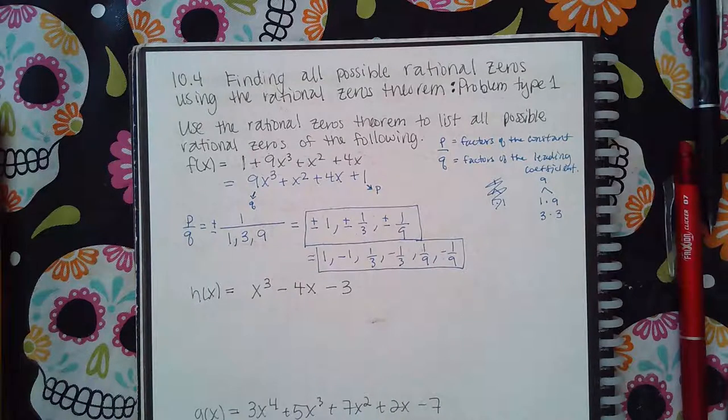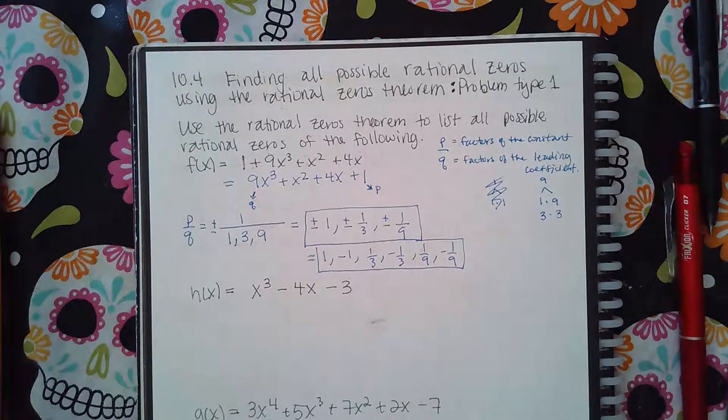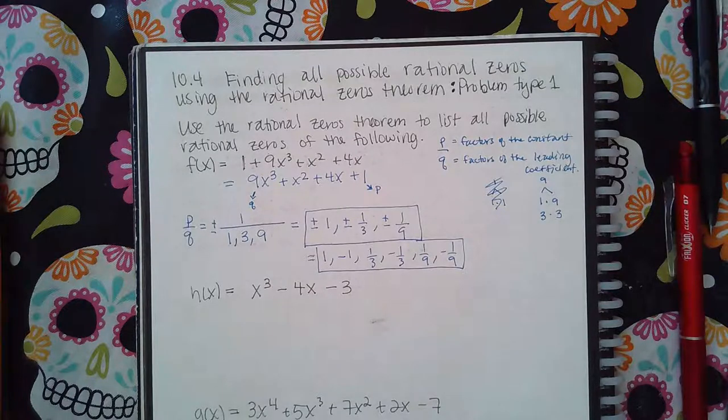So there's actually six possible values that could be zeros of this polynomial. It's not saying they are all zeros. It's just saying if you're going to have a zero, a real zero, it's going to be one of these guys.